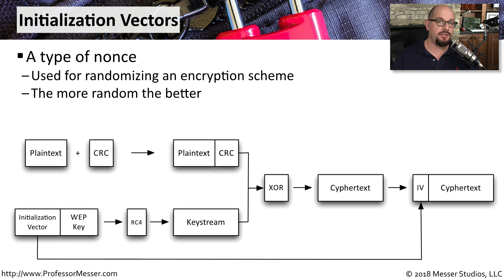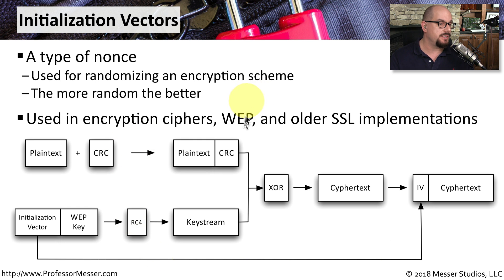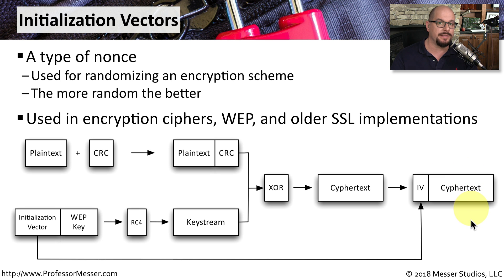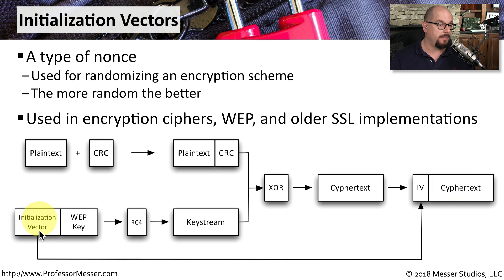If we need to randomize an encryption scheme, we commonly use an initialization vector, or an IV. This is a type of nonce that provides randomization for the encryption process. We use this in encryption ciphers — it's used in WEP encryption and older SSL implementations. This particular block diagram shows the original WEP encryption that uses an initialization vector at the beginning, and adds the initialization vector to the beginning of the ciphertext at the end of the encryption process. You can see the use of an initialization vector at the beginning of the process, and you need that vector at the end, so the IV is also sent with the ciphertext to the recipient.